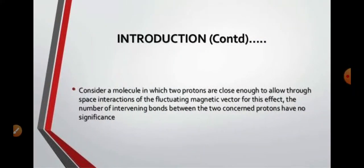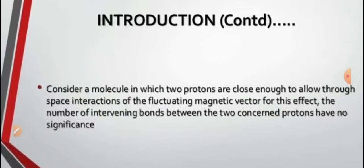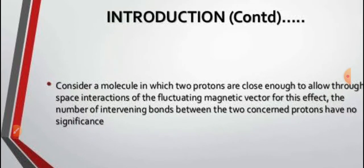The NOE occurs when two protons are in close proximity in the molecule — close enough to allow through-space interaction. Examples of closely situated protons within a molecule include geminal and vicinal protons, which are separated by two or three bonds. However, it is specifically through-space closeness that matters, not bond separation.